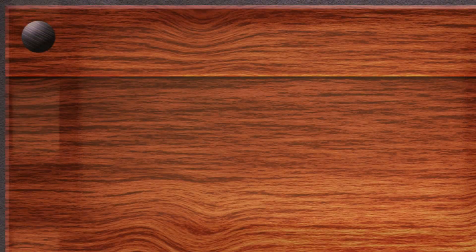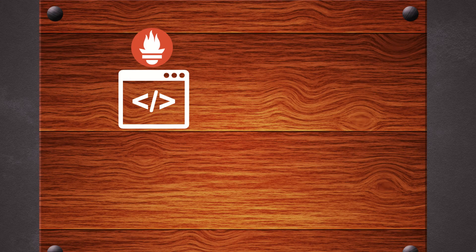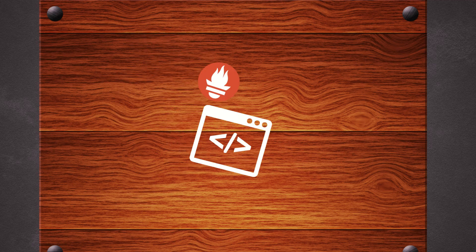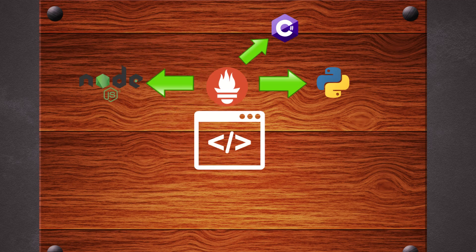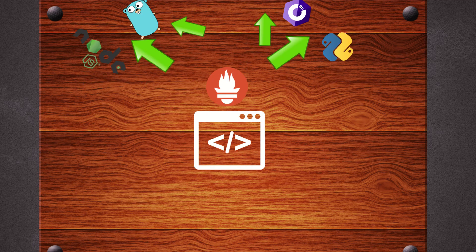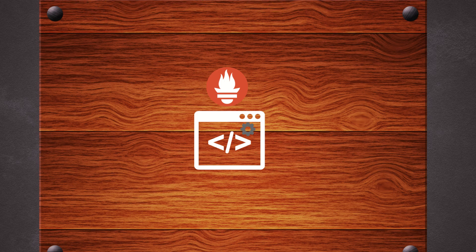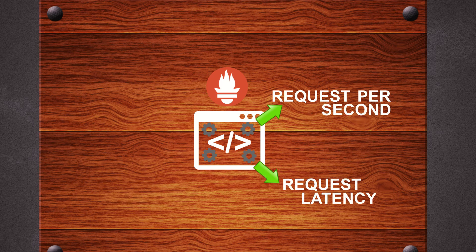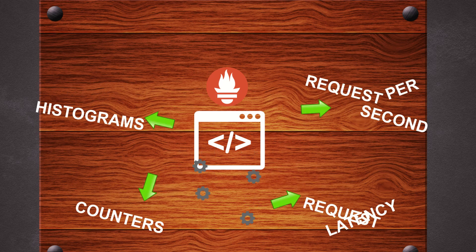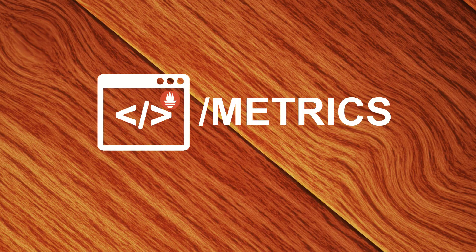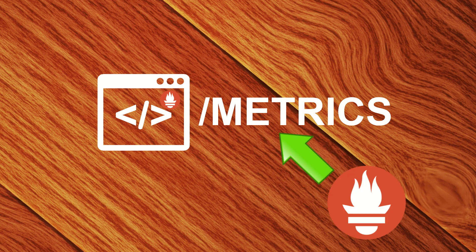To get metrics, our application needs a Prometheus library. There is a Prometheus library available for most programming languages. You use the library to instrument the code to get the metrics you want, like requests per second, request latency, counters, and histograms. The library will give you a metrics endpoint, and we'll then use Prometheus to scrape this endpoint periodically to collect the metrics.